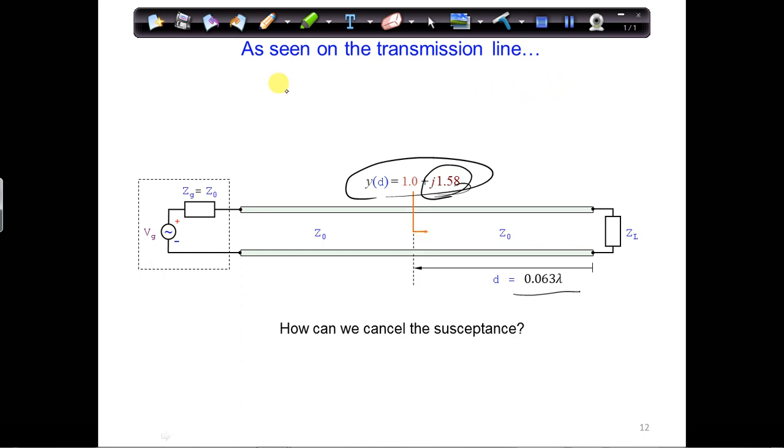The admittance of a capacitor, Yc, is jωc, and this is a positive value. This means we can only insert a capacitor to cancel a negative susceptance along the transmission line.